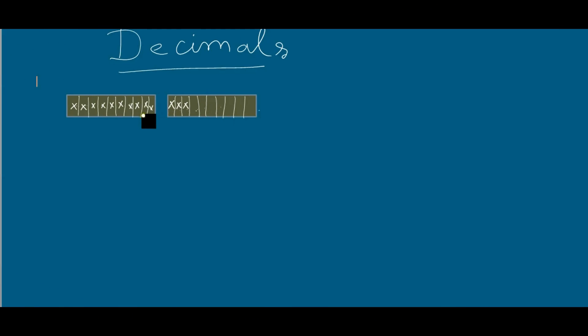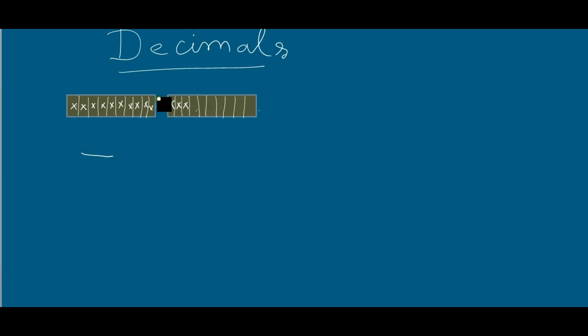Here I have created two boxes and divided each box equally into ten equal parts. I have crossed all ten parts of this box and only three parts of this box. As I have divided this box into ten equal parts, we write ten as the denominator, as usual when writing a fraction.